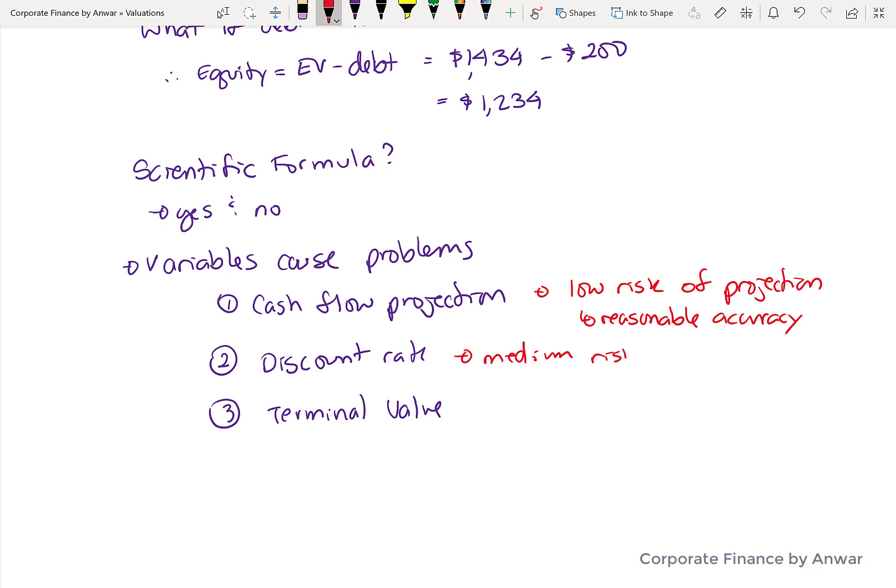The discount rate is probably, again, a medium risk. You have a general idea of what investors are expecting.